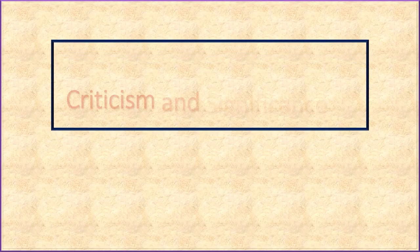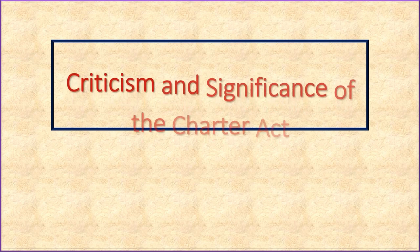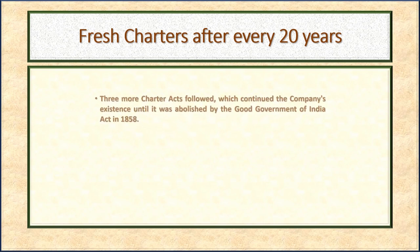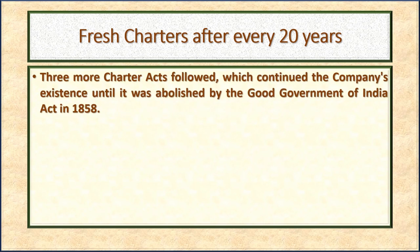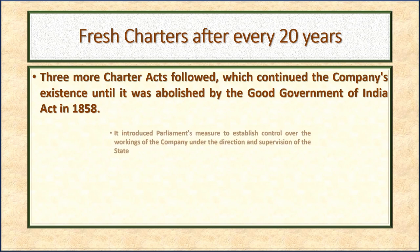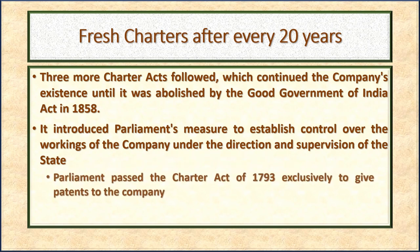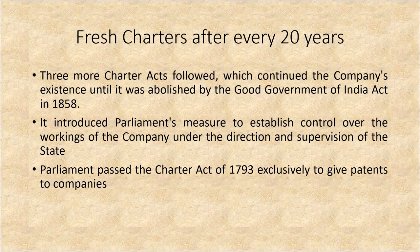We are going to explain the criticism and significance of the Charter Act of 1793. Point one: It started a series of fresh charters after every 20 years. Three more Charter Acts followed, which continued the company's existence until it was abolished by the Good Government of India Act in 1858. It introduced Parliament's measure to establish control over the workings of the company under the direction and supervision of the state. Parliament passed the Charter Act of 1793 exclusively to give patents to the company.